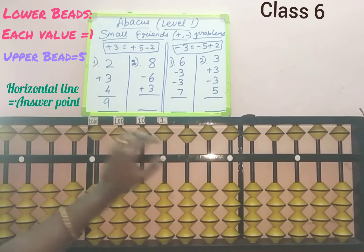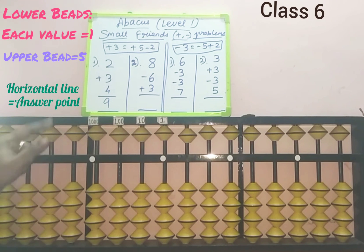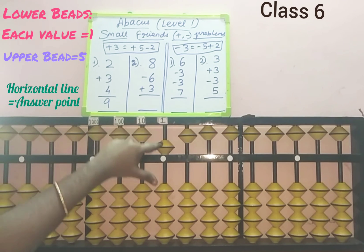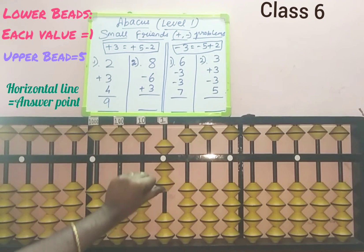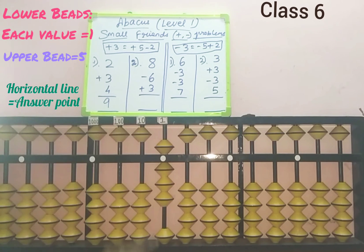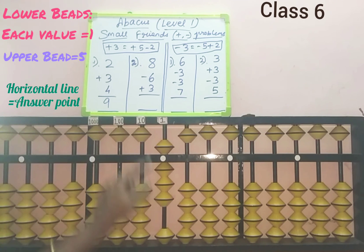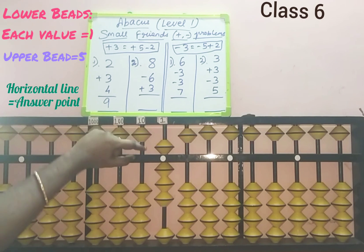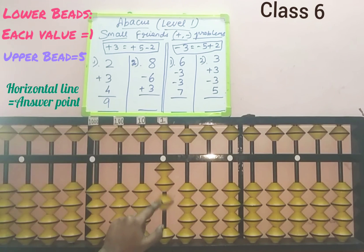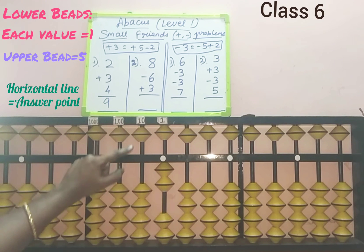Next we will see the second sum: 8 minus 6 plus 3. Add 8 in the ones slot — place value of 8 is 1, so start from upper beads: 5, 6, 7, 8 — 8 is added. Next from the second row, remove 6 beads in the ones slot. After counting, 6 beads are removed from the answer point — minus 6 completed.